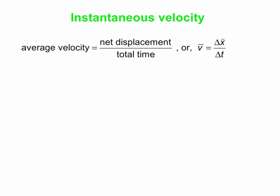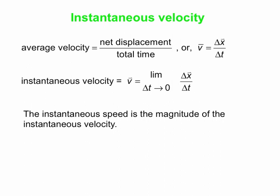How do we define instantaneous values mathematically? Remember, average velocity is delta x over delta t. The instantaneous velocity is the limit of delta x over delta t as delta t approaches zero — that's the calculus definition. The instantaneous speed is the magnitude of the instantaneous velocity. If you're looking at just one instant, the time interval is so small that there can be no changes in direction, so the instantaneous speed is always the magnitude of the instantaneous velocity.